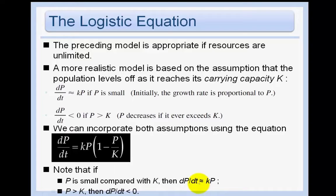In the logistic growth model, dp/dt is equal to kp if the population is small — so initially we grow really fast at an exponential rate — but then dp/dt is less than 0 if p becomes greater than K. So if the population is greater than some carrying capacity K, growth is negative.